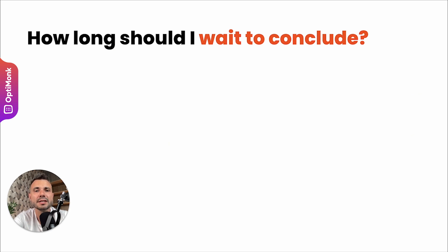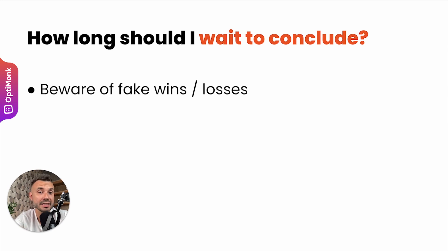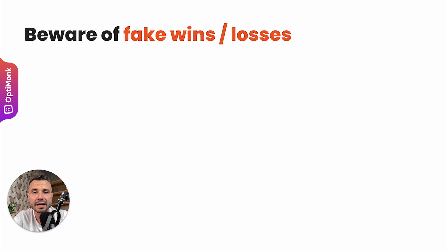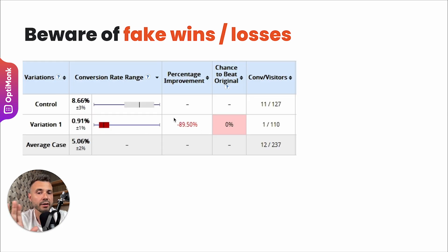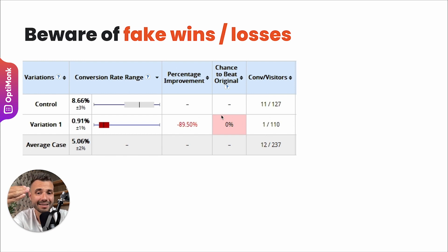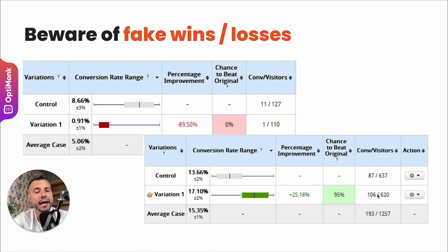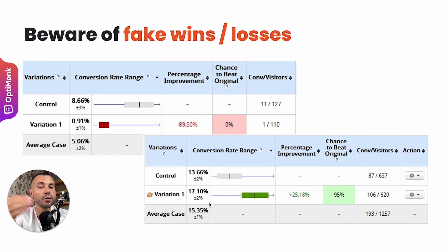How long should you wait to conclude an A/B test? You have to beware of fake losses and fake wins. There's a good example on the CXL blog: after running for just one day, there were 11 conversions on the control and only 1 on the variation — giving a chance to win of 0%. But after a few days, the tide turned. The variation had 106 conversions while the control had 87, meaning the variation's chance to win became 95%.